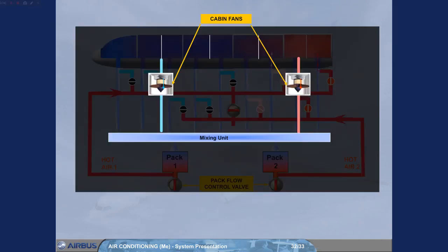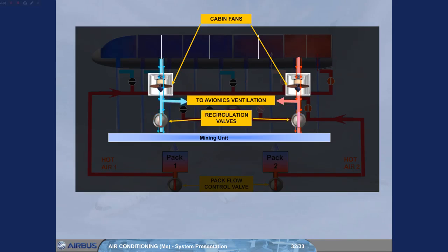Two cabin fans are installed to recycle cabin air and therefore save fuel. They are used to blow air from cabin to avionics and to the mixing unit through two recirculation valves. Note, in normal operation, there are no ECAM indications linked to the cabin fans.